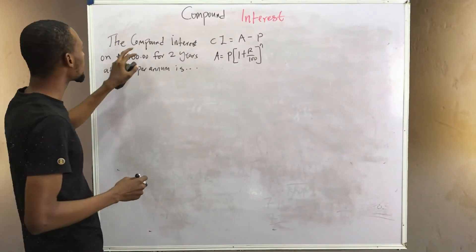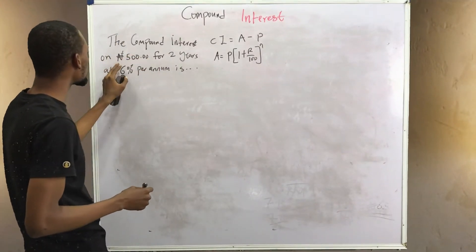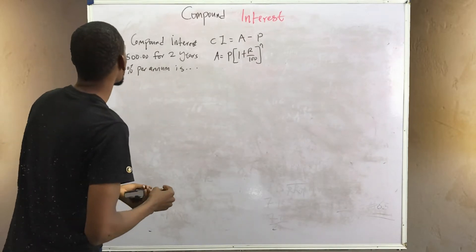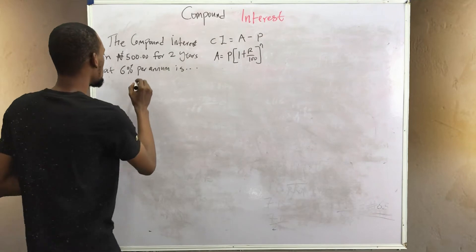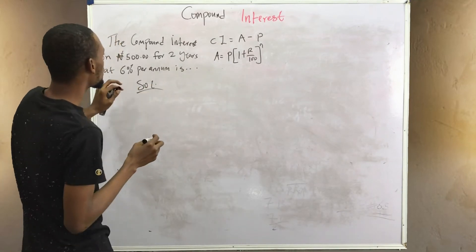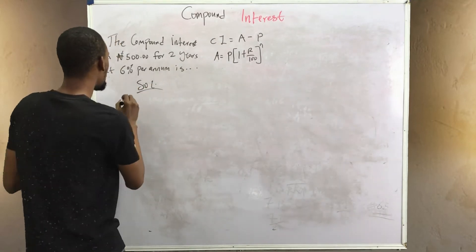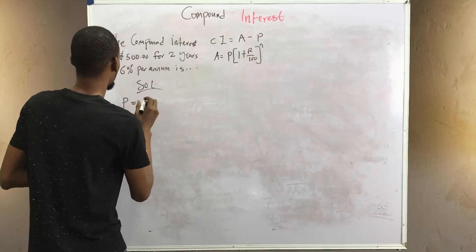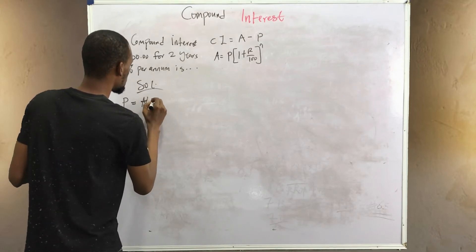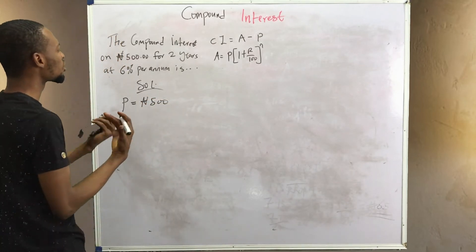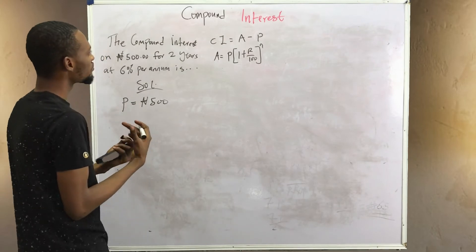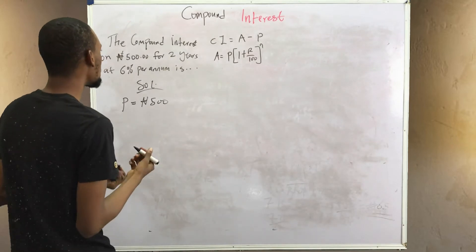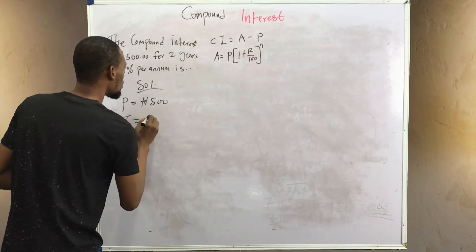Let's look at a question. It says: find the compound interest on 500 naira for two years at six percent per annum. Note that compound interest equals amount minus principal. The principal P equals 500. We can solve this with or without a calculator.